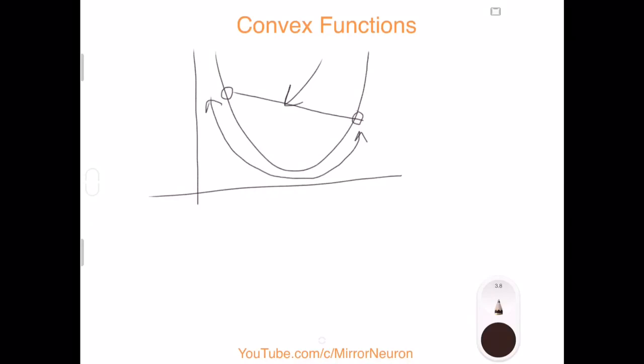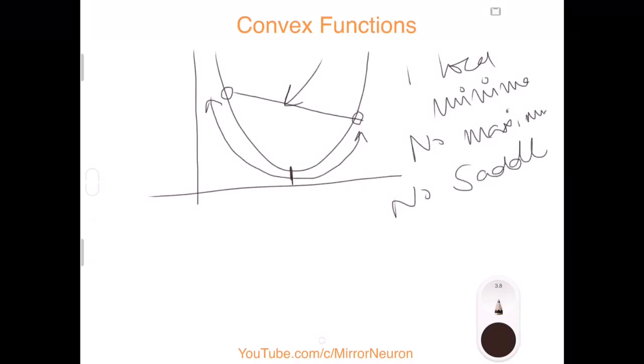What are the benefits of convex functions? It has one local minimum or minima. It has no maximum, so there is no point where the function is maximum, and there are no saddle points. That is the beauty of convex functions.